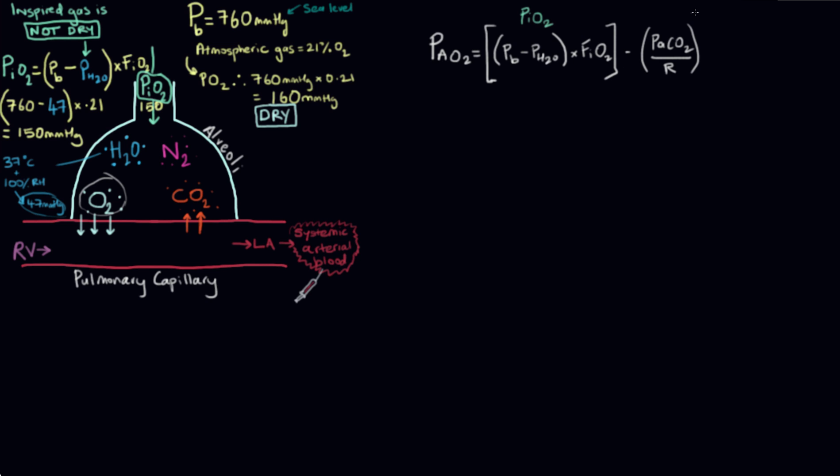And then all this part over here is just us factoring in the alveolar carbon dioxide. We know that the carbon dioxide that's present in the alveoli is going to take up some of the partial pressure, so this is how we factor that in. We're going to take the arterial partial pressure of carbon dioxide.